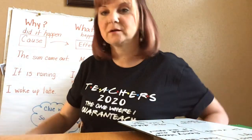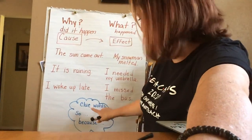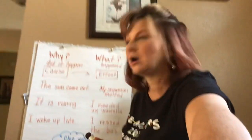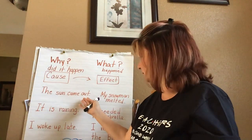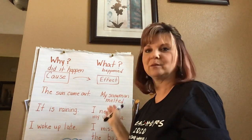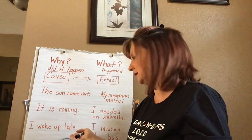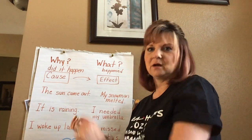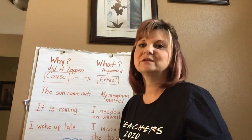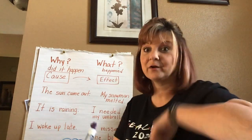So when you're reading, boys and girls, there are some clue words that can help you remember cause and effect. If you see the words 'so' or 'because,' then you can understand that you're probably gonna have cause and effect. Let's try it: 'The sun came out, so my snowman melted.' 'It was raining, so I needed my umbrella.' Or 'Because it was raining, I needed my umbrella.' 'I woke up late, so I missed the bus.' 'I missed the bus because I woke up late.' You see how they go together? So when you're reading, try to think of cause and effect — what happened in the story and why it happened. I hope you enjoyed our lesson. Take care and keep learning.